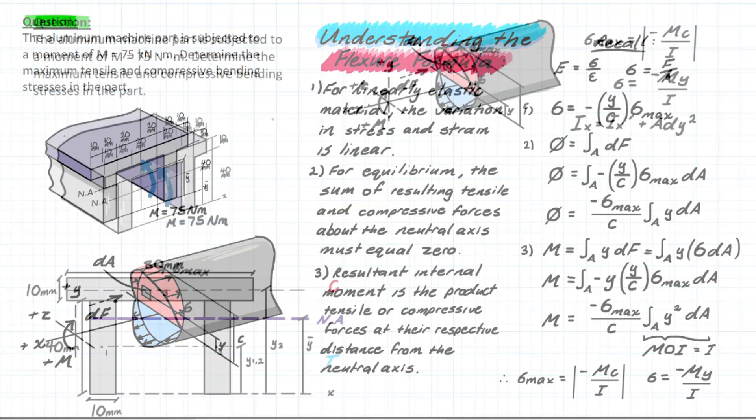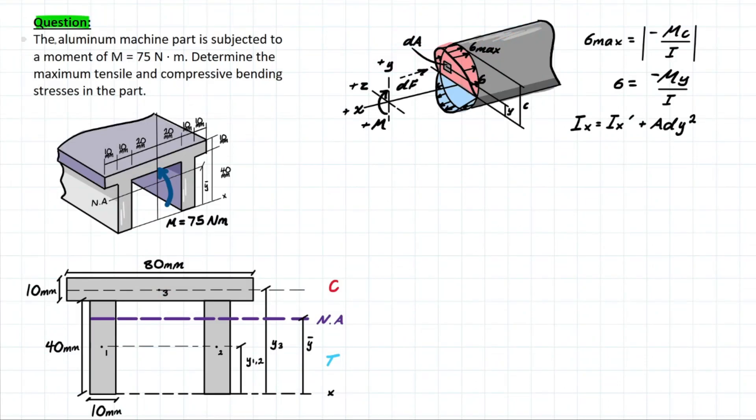Now that's all explained, let's hop into the problem and see what we're dealing with. So now we can hop into the problem. The problem is as follows: The aluminum machine part is subject to a moment of M = 75 kN·m. Determine the maximum tensile and compressive bending stresses in the part. The first thing you're going to notice is that I've drawn a completely different picture here, just so we can see the front dead on and really see what we need to take out for this problem to make sense.